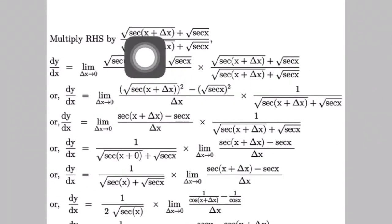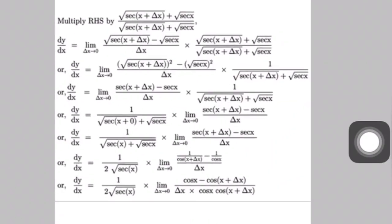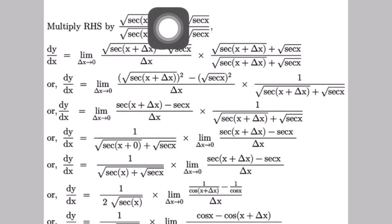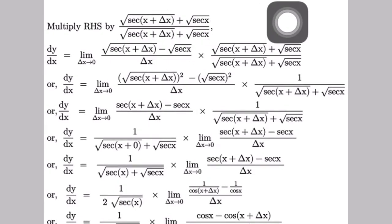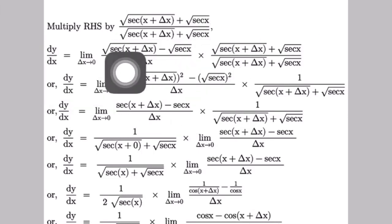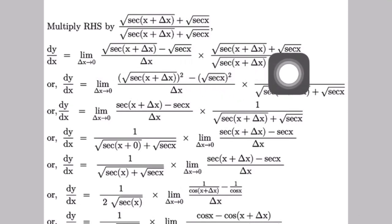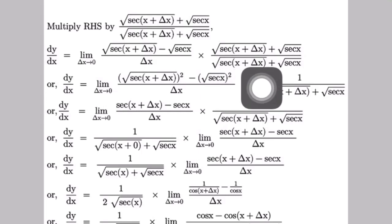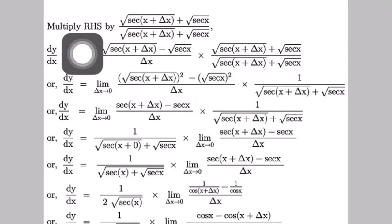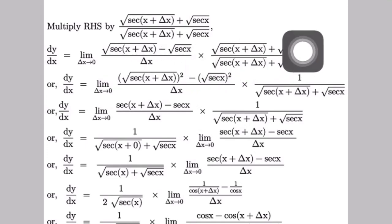Now we have to multiply the right-hand side by the conjugate: [√(sec(x + δx)) plus √(sec x)] divided by [√(sec(x + δx)) plus √(sec x)]. Then we get dy/dx equals limit as δx tends to 0 of [√(sec(x + δx)) minus √(sec x)] times [√(sec(x + δx)) plus √(sec x)] in the numerator. You know these terms are in the form of (a minus b)(a plus b), which gives a² minus b².